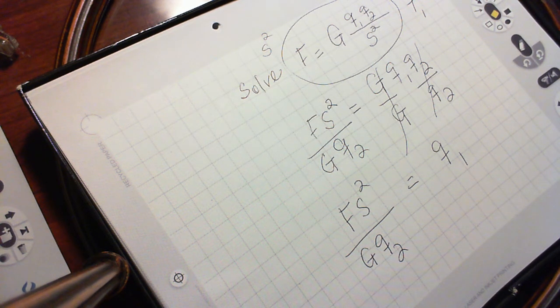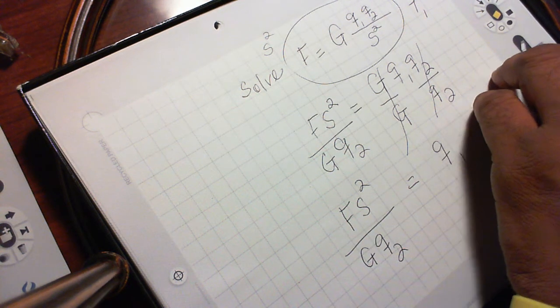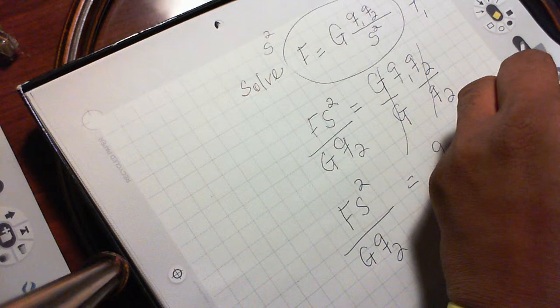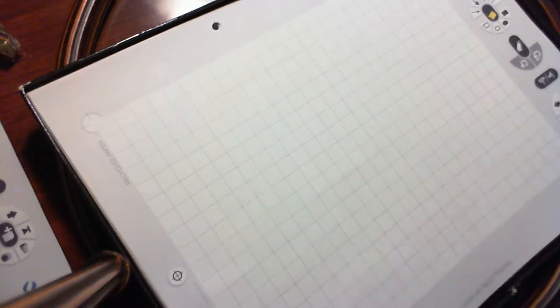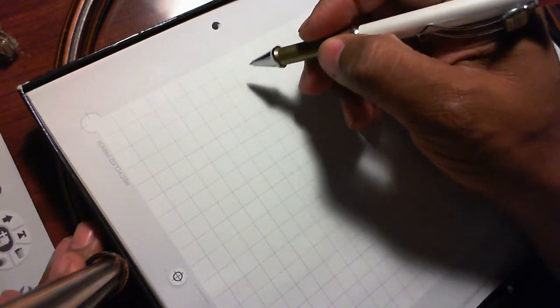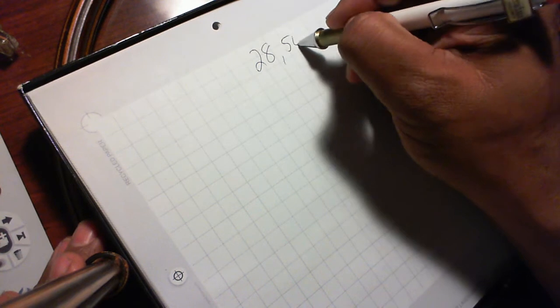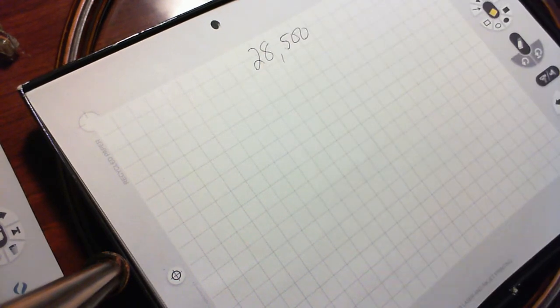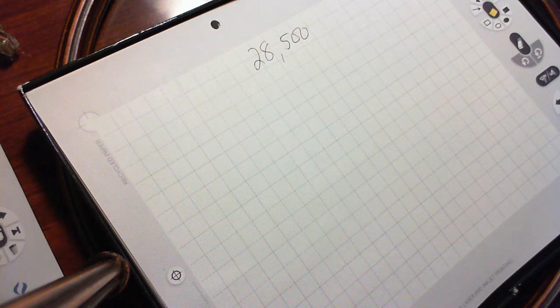A new car has a list price of $28,500. This is another problem that I'm doing for you. $28,500. The dealership marks up this car at 5%. Suppose the dealer markup on this car is 5%. What is the dealer cost?